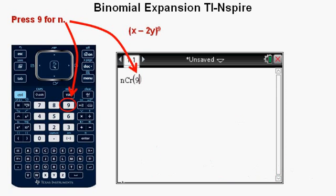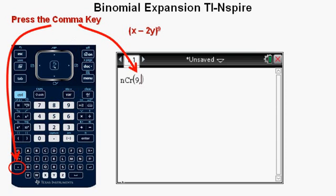Now we'll use the calculator to determine the coefficients. Enter the value for N, 9. Next press the comma key at the lower left of the keypad.